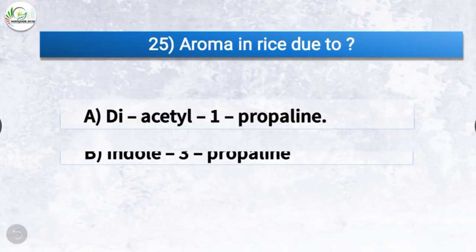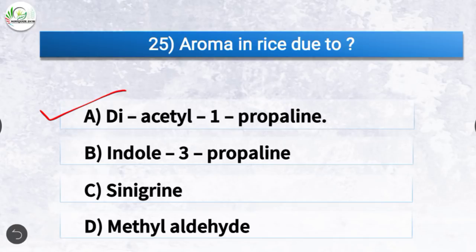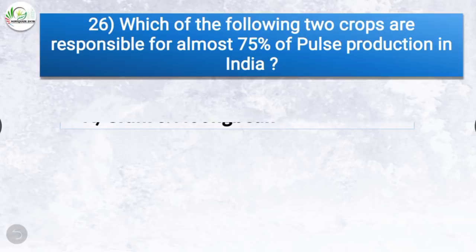Question number 25: Aroma in rice is due to? The correct answer is option A, diacetyl-1-propylene. Aroma in rice is due to diacetyl-1-propylene.